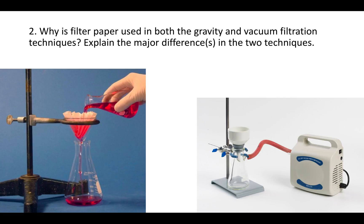Question 2 asks why filter paper is used in both gravity and vacuum filtration techniques. Both are forms of filtration, which is separating things based on size. To do that, you need a mesh with holes of a certain size so that only things smaller than those holes can get through, and anything bigger will stay behind. That's why you use filter paper in both techniques — you need a mesh to separate things based on size.